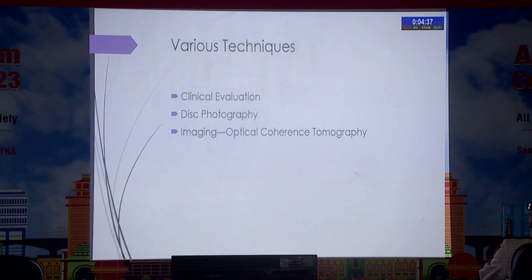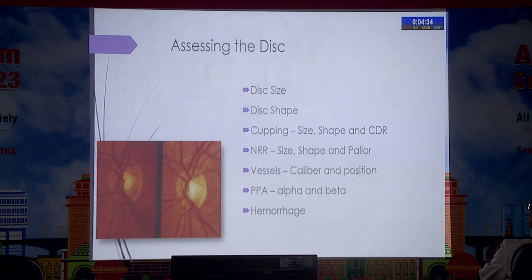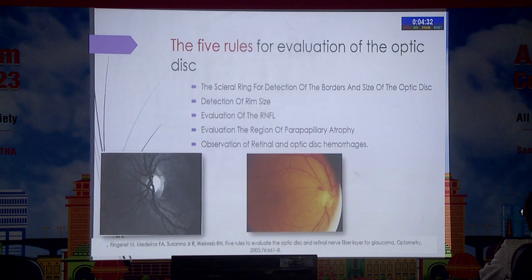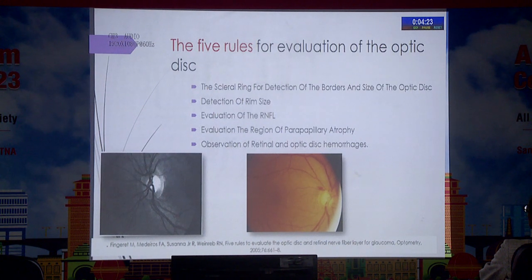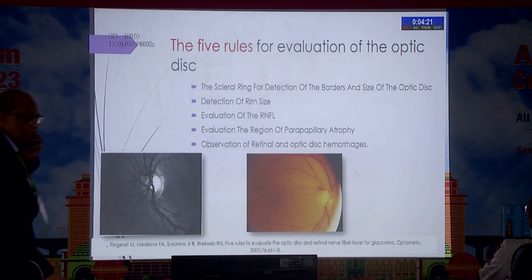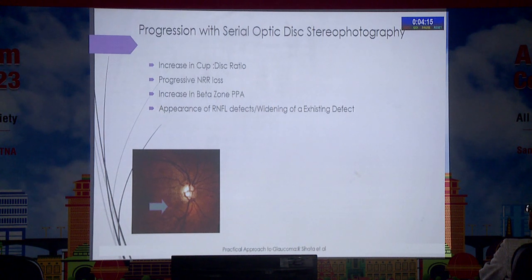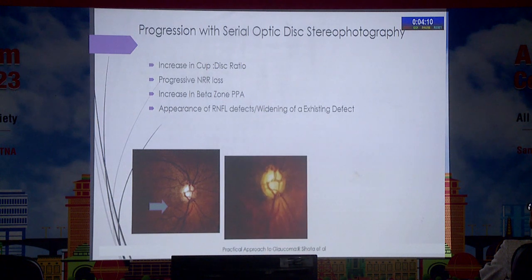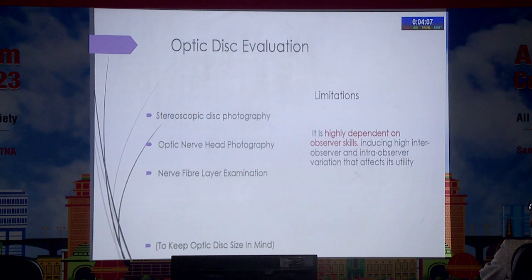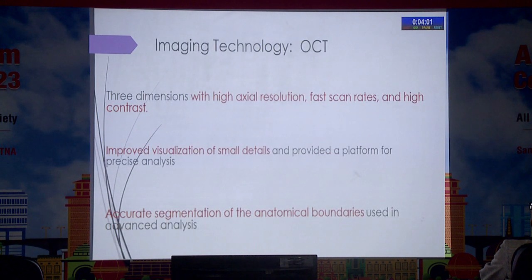Before that, let's have a few lines about disc progression assessment. For evaluation of disc changes there are five key points to keep in mind, starting with identifying the scleral ring which gives detection of the borders, and disc hemorrhage. For example, over a period of eight years there is broadening of RNFL and increase in beta zone parapapillary atrophy. However, disc assessment is a subjective method.